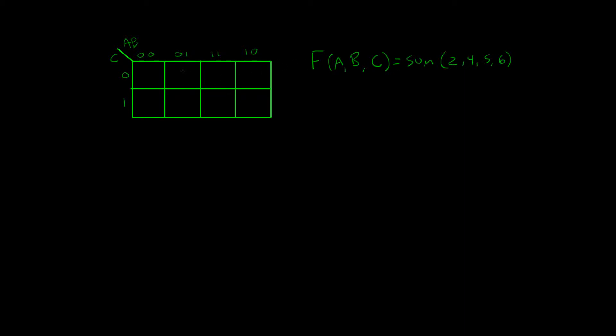So we put a value of 0, 1, 2, 3, 4, 5, and 6. So we have these four 1's in the K-map. And now we want to find the blocks, the prime implicants.